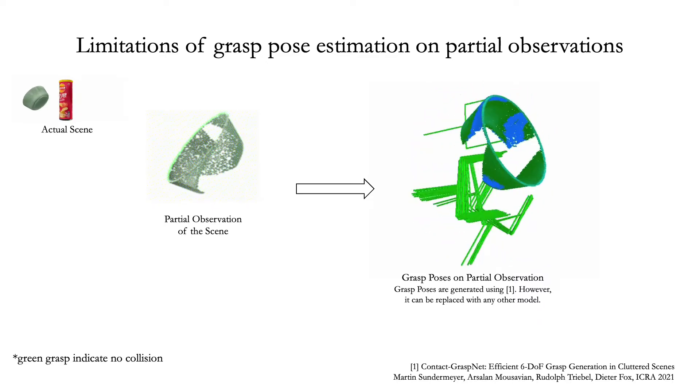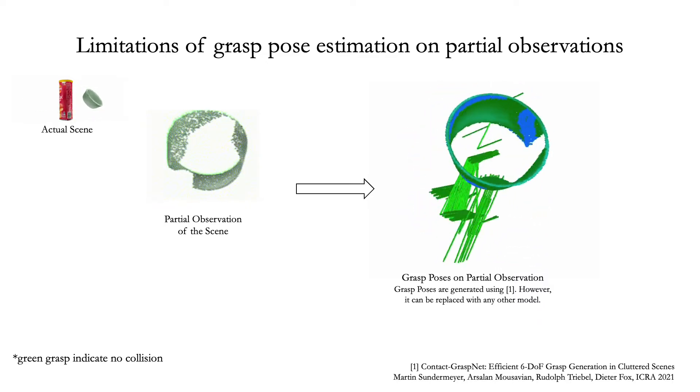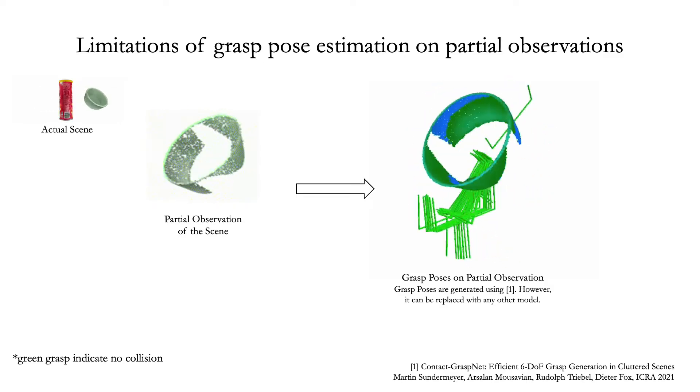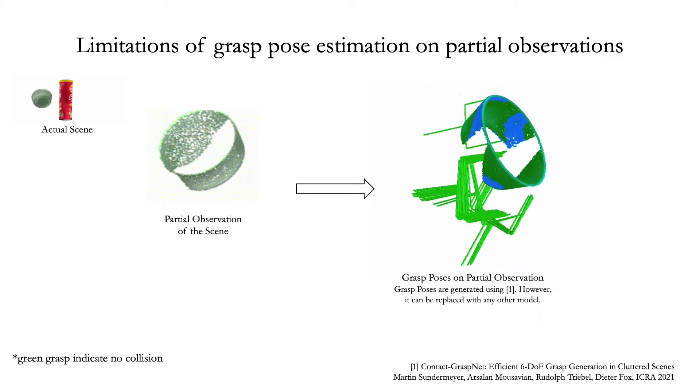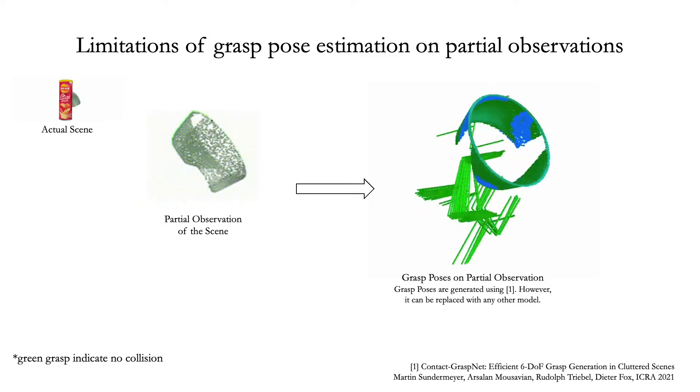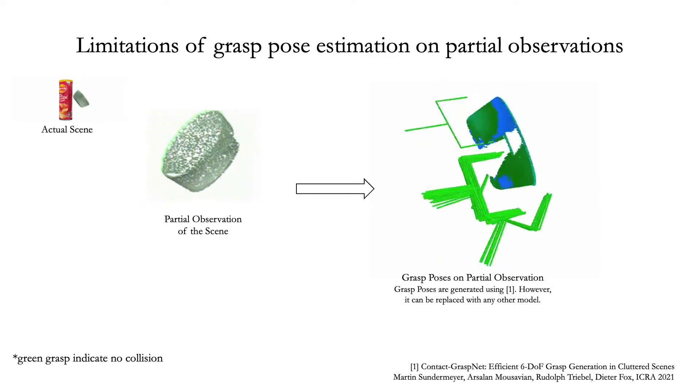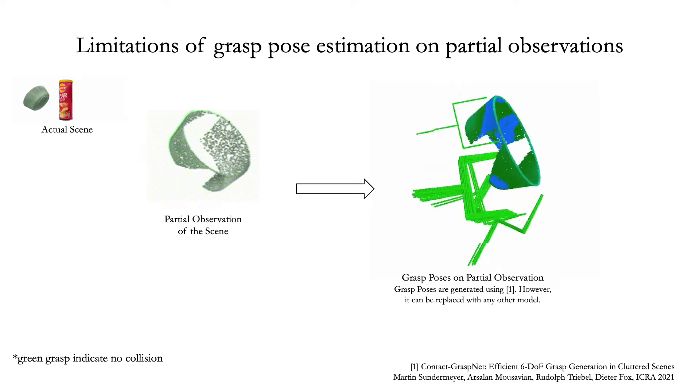SCARP can be used to improve grasp pose estimation. Here we show an example of a real-world object captured from a single view. The grasps are predicted by a state-of-the-art grasp proposal network, Contact GraspNet. The green color indicates that these grasps do not collide with the observed object.